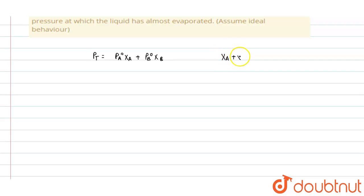And sum of mole fractions equals 1, so X_B can be written as 1 - X_A. So put this value here. The P_t can be rewritten as P_A° X_A + P_B°(1 - X_A). From here, P_t will be equals to P_A° - P_B° X_A